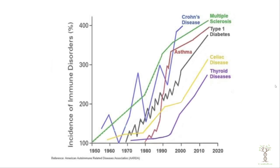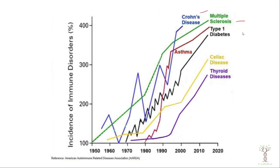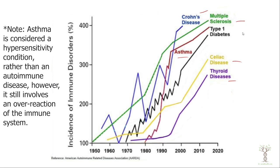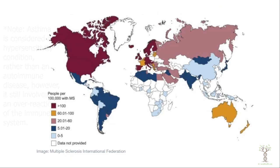In the last few decades the incidence and prevalence of autoimmune diseases has been increasing dramatically, and interestingly this is happening primarily in industrialized countries like North America, Europe, and Australia. Looking at a graph from about the 1950s to recently, there's been a continuing increase in diseases like multiple sclerosis, Crohn's, asthma, celiac, and thyroid diseases. Geographic distribution maps for conditions like multiple sclerosis and psoriasis show a consistent pattern where industrialized countries tend to have higher rates.